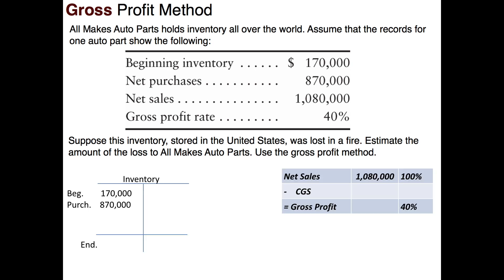In our inventory T account we know beginning inventory, and we know our purchases: $870 less purchase discounts and purchase returns gives us net purchases of positive $870, which increases inventory. We also know our net sales — after sales returns, allowances, and discounts — to be $1,080,000. We're looking for cost of goods sold, and they do give us the gross profit rate.